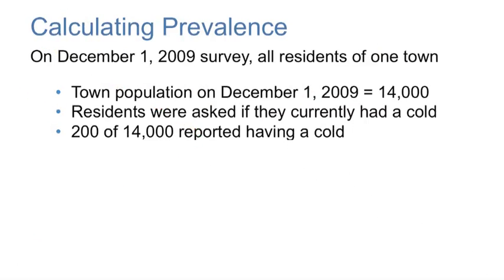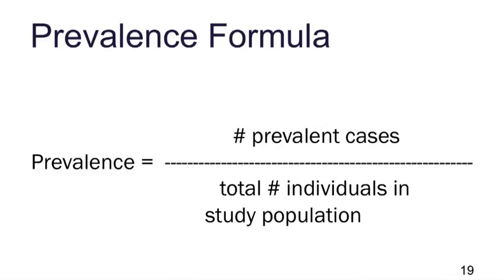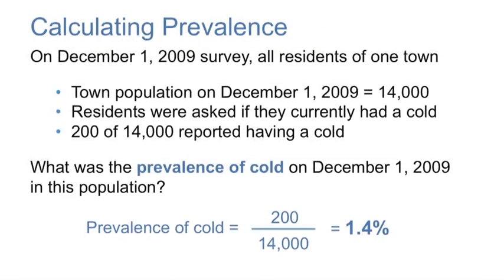We will work through an example of how to calculate prevalence. On December 1, 2009, all residents in one town were surveyed, so the total population at this date was 14,000. The residents were asked if they currently had a cold; 200 of the 14,000 reported having a cold. Using the prevalence formula, the numerator is 200 prevalent cases of cold, and the denominator is 14,000 residents. Thus, the prevalence of cold in the town on December 1, 2009 was 1.4%.